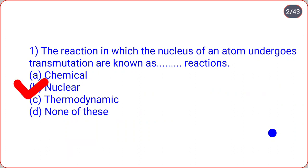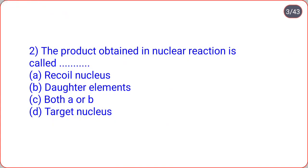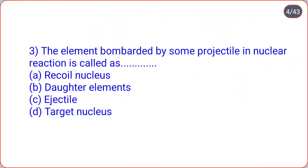The next question: the product obtained in nuclear reaction is called? Options are recoil nucleus, daughter element, both A and B, target nucleus. So the correct option is C, that is both A and B — recoil nucleus and daughter element.